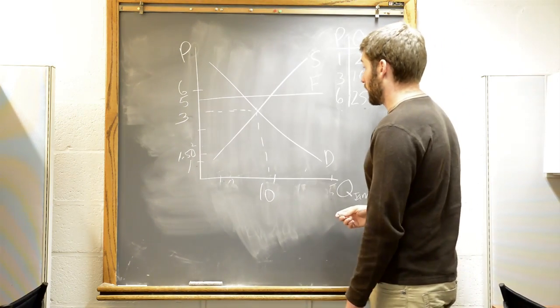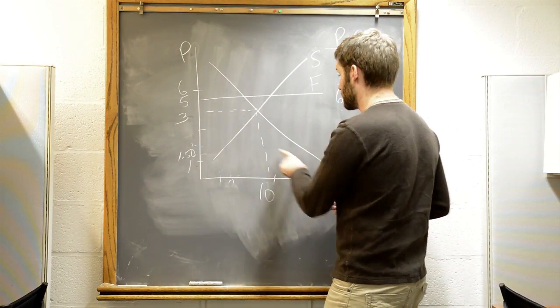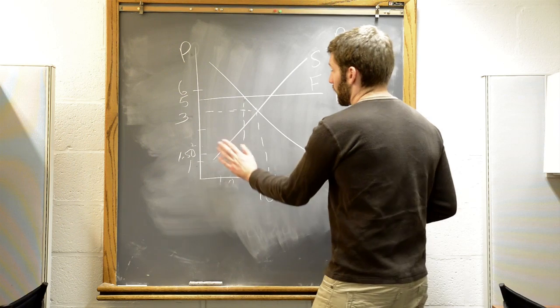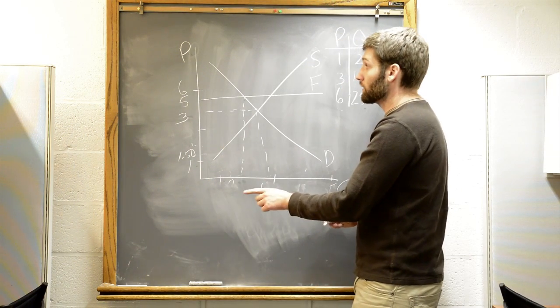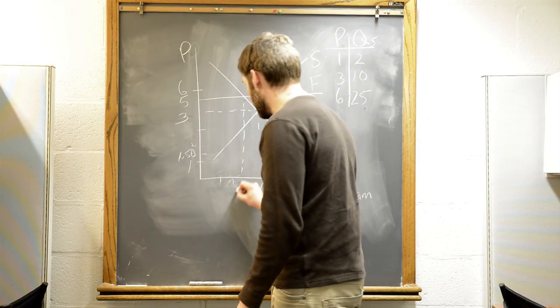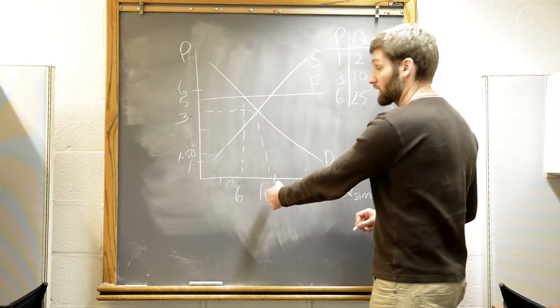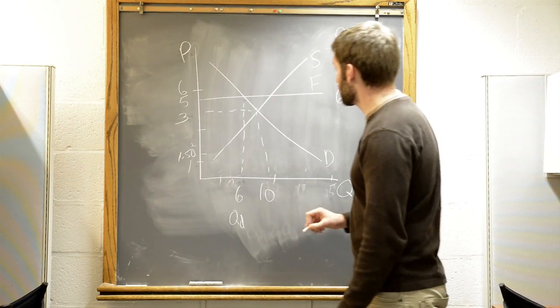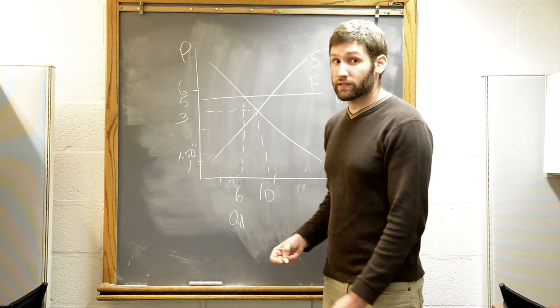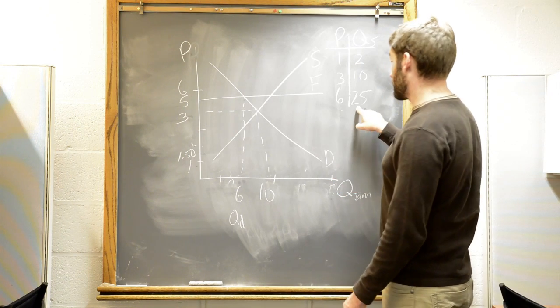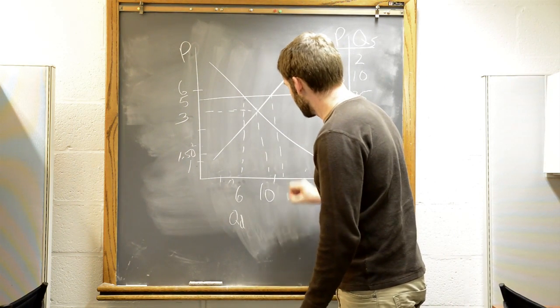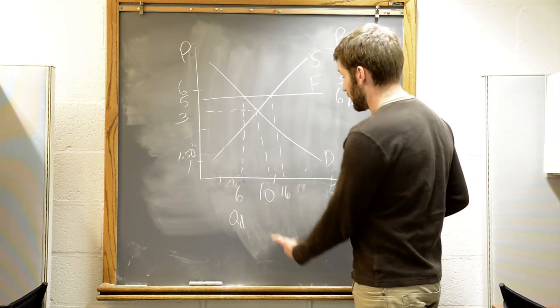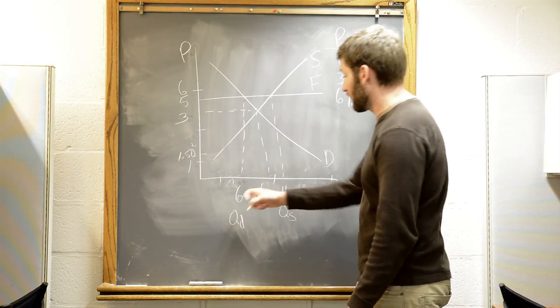So in this case, we can find our quantity demanded. That's going to be on the left this time because we're following our demand curve to where it meets the price floor. So now, everyone to the left of this point values jam at at least $5. Let's say that this is six people. We know that it's less than 10, more than zero. So this is our quantity demanded. What about our quantity supplied? Well, at a high price of $5, they're really excited to supply it. We know that it's less than 25. Let's call it 16.